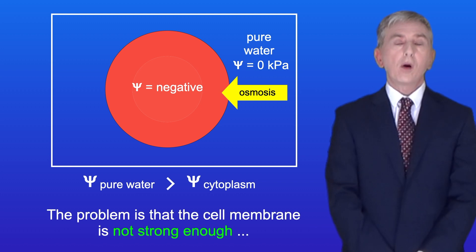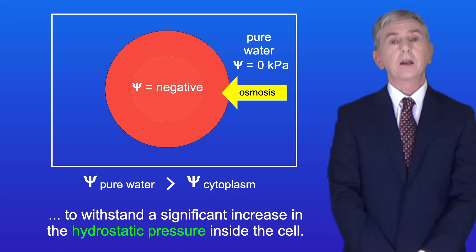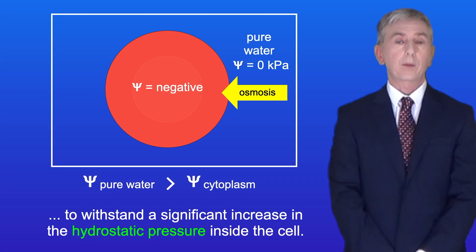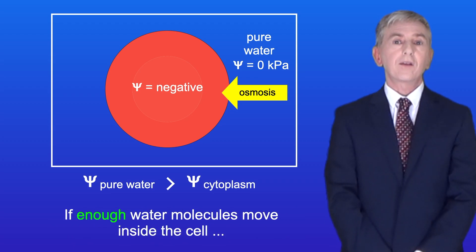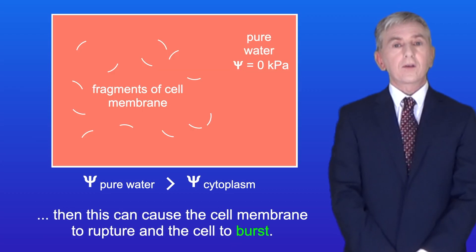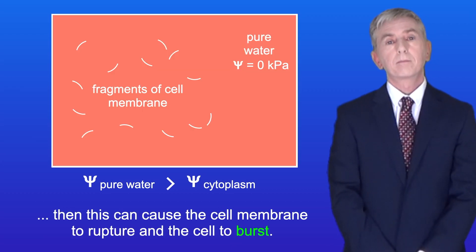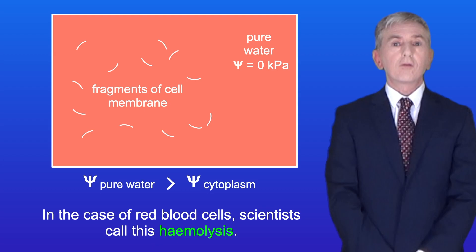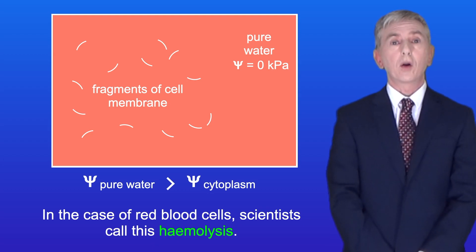The problem is that the cell membrane is not strong enough to withstand a significant increase in the hydrostatic pressure inside the cell. So if enough water molecules move inside the cell, this can cause the cell membrane to rupture and the cell to burst. In the case of red blood cells, scientists call this hemolysis.